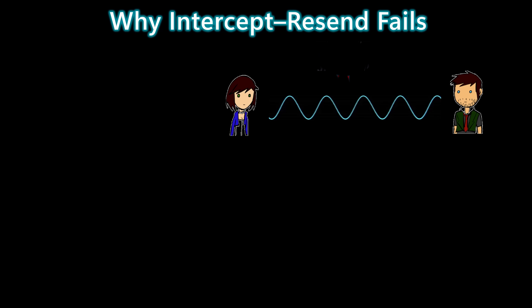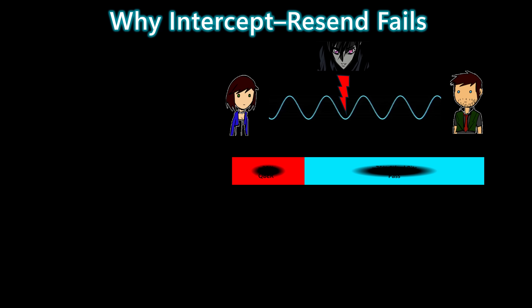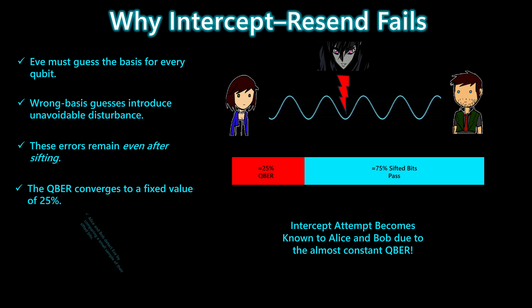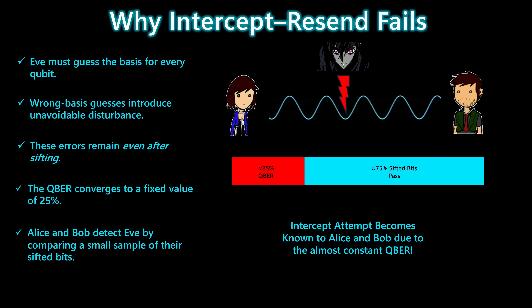Here's the key reason intercept-resend doesn't typically work. Because Eve has to guess the basis for every qubit, she inevitably chooses the wrong basis half the time. Those wrong guesses introduce disturbance that persists even after Alice and Bob sift their key. As the key grows, that disturbance settles into a stable 25% error rate. So when Alice and Bob compare a small sample of their sifted bits, the QBER instantly reveals Eve's presence. That's why intercept-resend is always detectable.